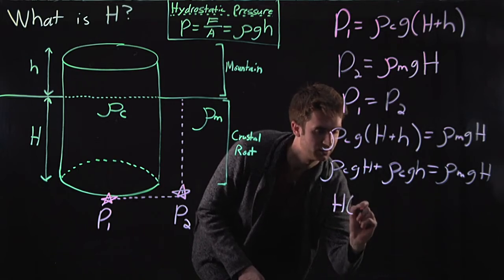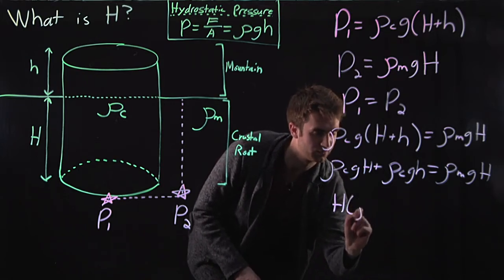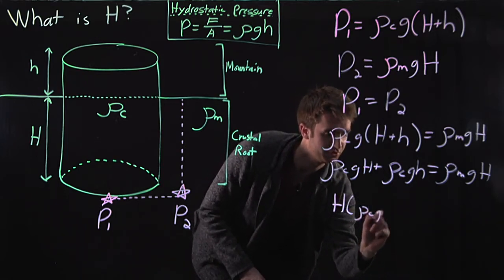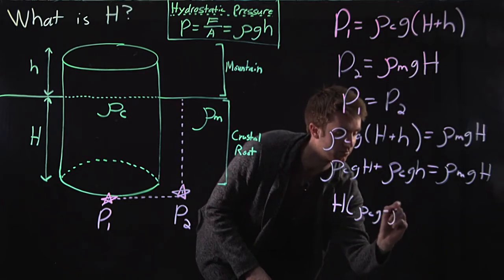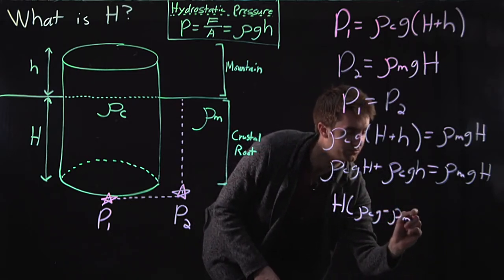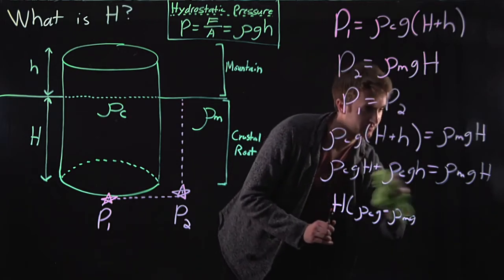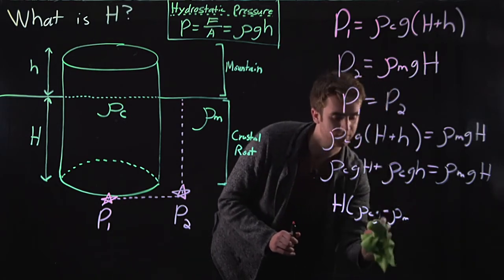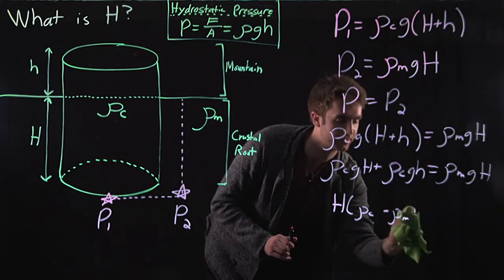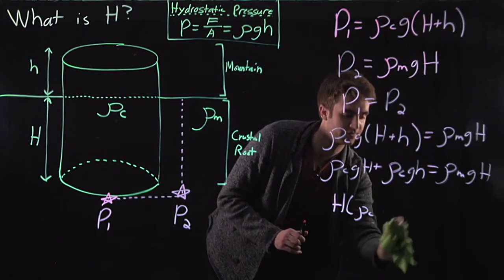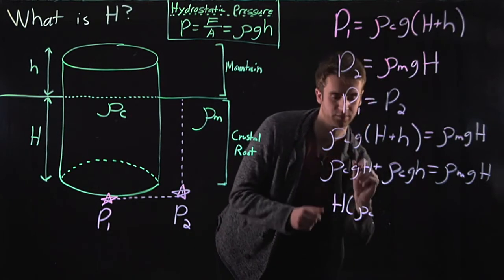H rho c, g minus rho m, g. And actually, the g's all cancel here, right? They're here in all the terms. We can go ahead and just drop them entirely. So let's go ahead and do that. Let's get rid of this g, this g, this g.